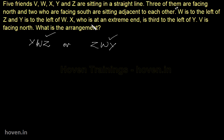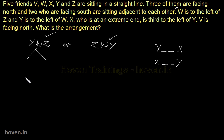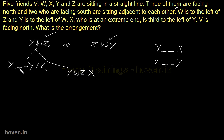X, who is at an extreme end, is third to the left of Y. This means Y and X will have two persons sitting between them. If X is towards one side, the arrangement becomes X — two persons — Y, meaning Y-W-Z-X. If X is towards the other side, the arrangement would be Y-W-Z-X — but that would make 6 members total, which is impossible since we only have 5. So that possibility is straightaway ruled out.